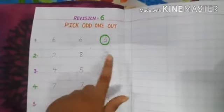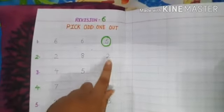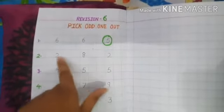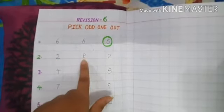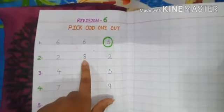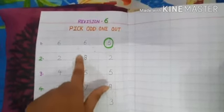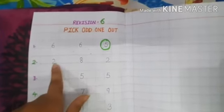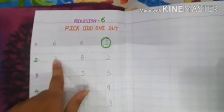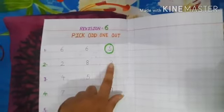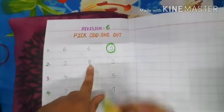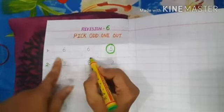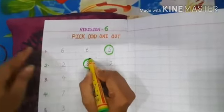Now come to the second point. Here: numbers 2, 8 and 2. Both 2s are brothers — they are the same. So you have to circle number 8.